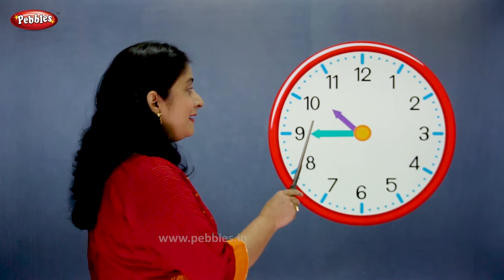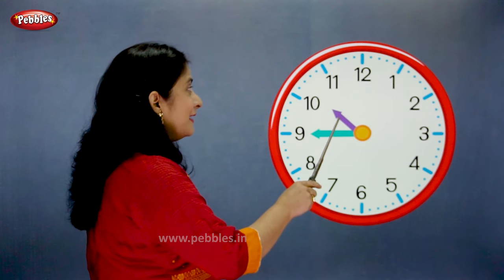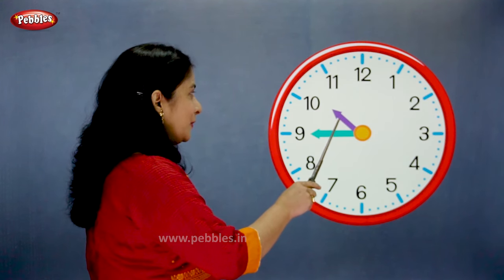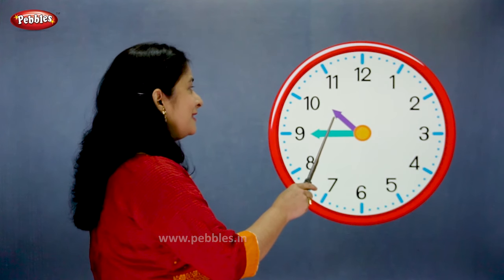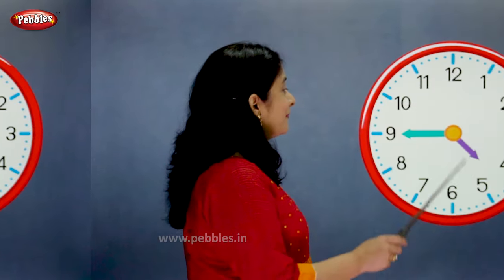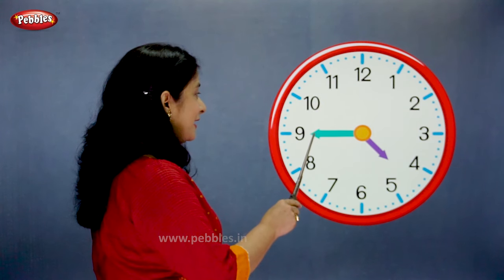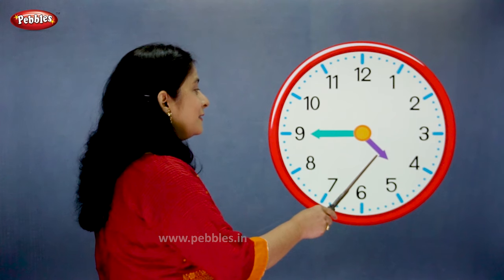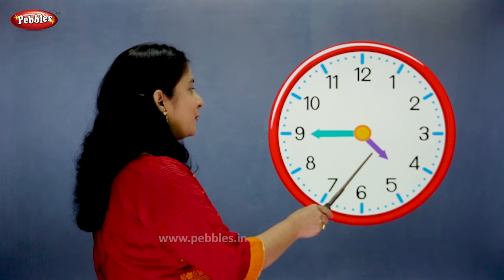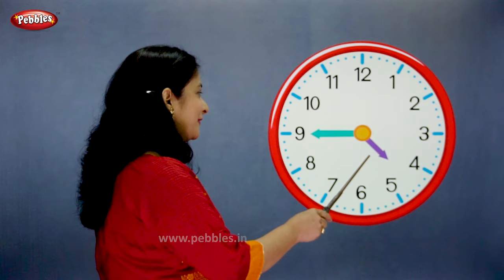The minute hand is on 9. The hour hand is moving towards 11. So we say the time is quarter to 11. The minute hand is on 9. The hour hand is moving towards 5. So we say the time is quarter to 5.